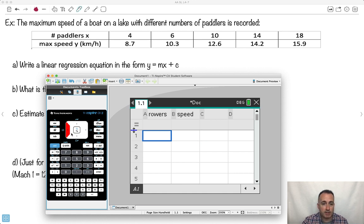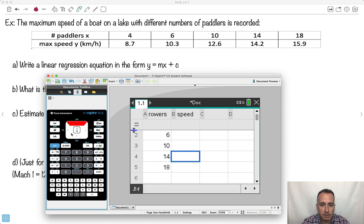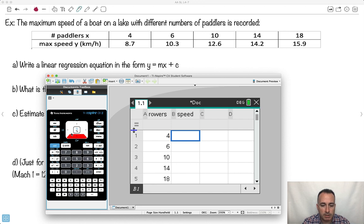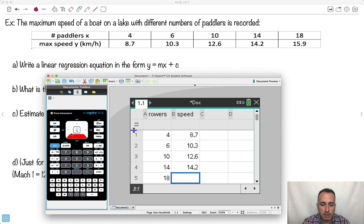What I'm going to do now is try to go ahead and type in all this stuff here. So let me go ahead and go 4, 6, 10, 14, 18. And I go up here and put in all the values. So 8.7, 10.3, 12.6, 14.2, and 15.9. Boom.